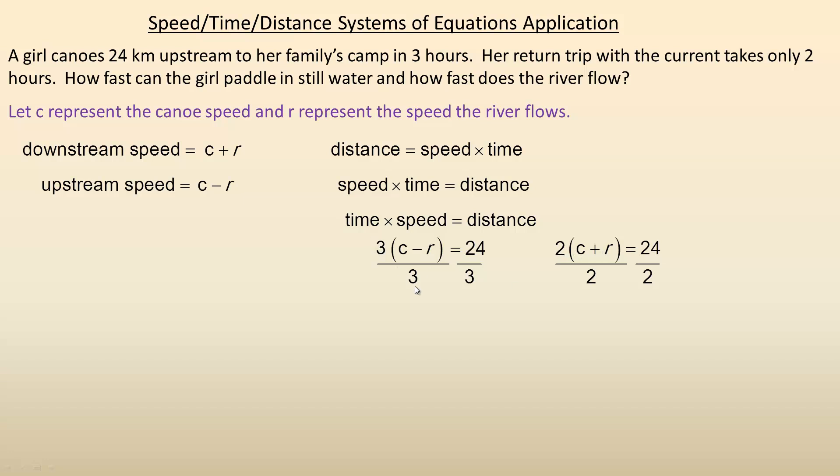If we divide out, the 3's are gone, so we just get C - R equals 8. And over here, the same thing - the 2's divide out, so we are left with C + R, and 24 divided by 2 is 12, so C + R equals 12.